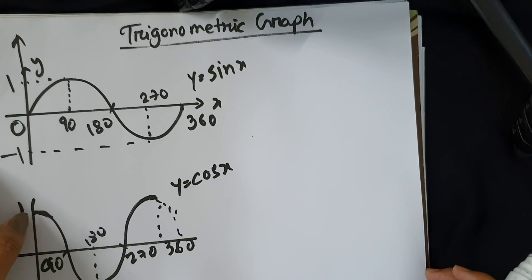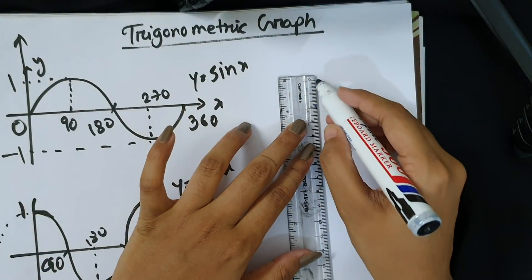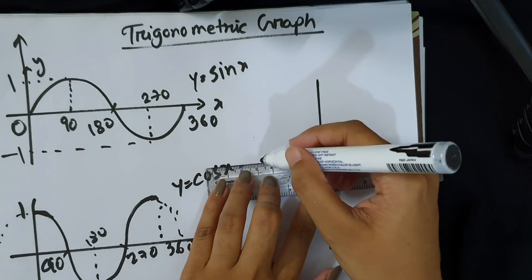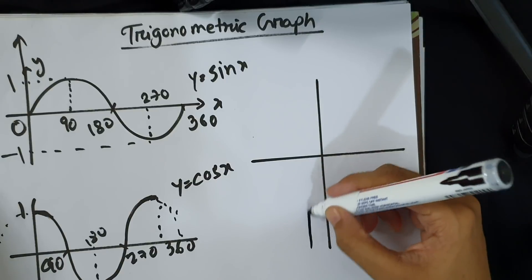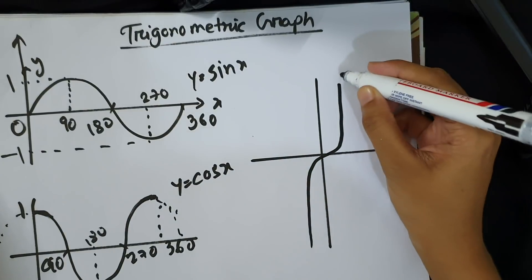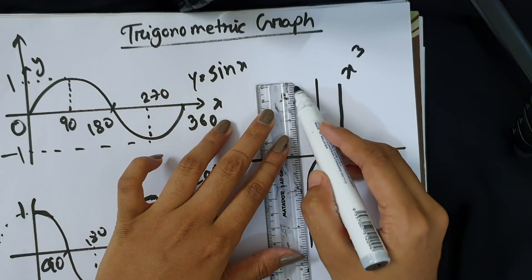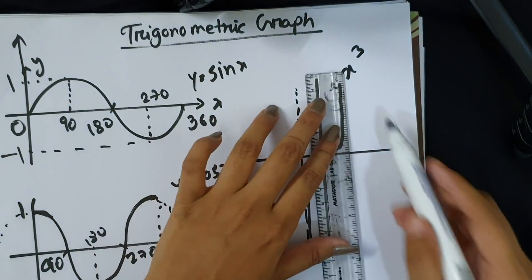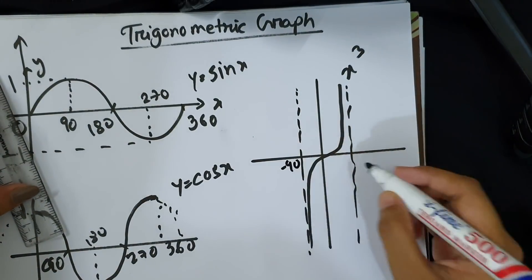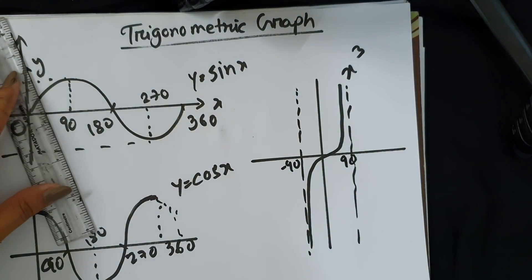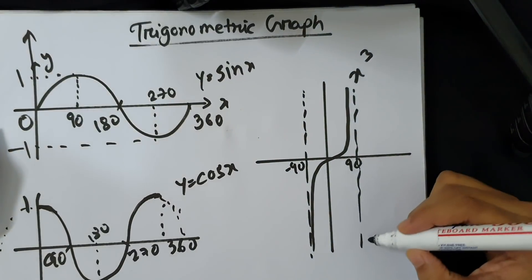Next is tan x. Tan x is a basic graph and we need to look at one cycle. For the exact graph, one cycle goes from minus 90 to plus 90 degrees, then the next cycle continues.